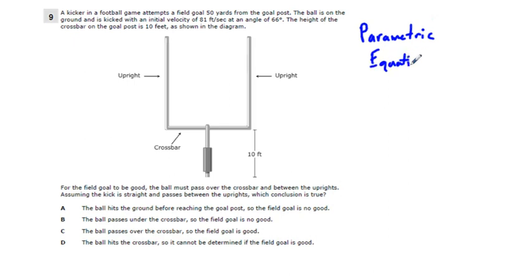A kicker in a football game attempts a field goal at 50 yards from the goal post. The ball is on the ground and is kicked with an initial velocity of 81 feet per second at an angle of 66 degrees. The height of the crossbar on the goal post is 10 feet. The ball is going to trace like this, an arc.